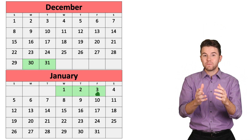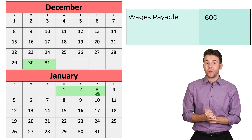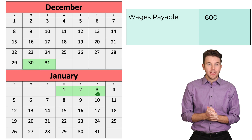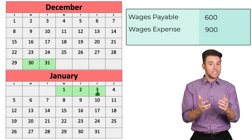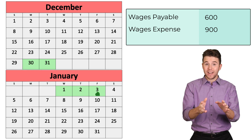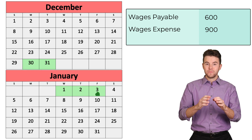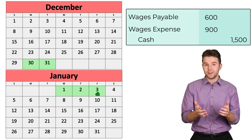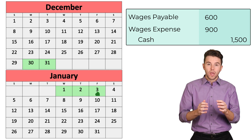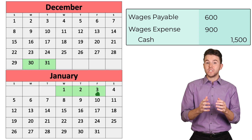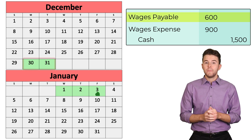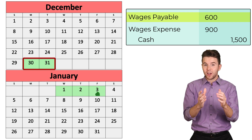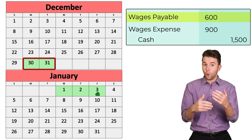To record this payment, we debit wages payable for $600, debit wages expense for $900, and credit cash for $1,500.